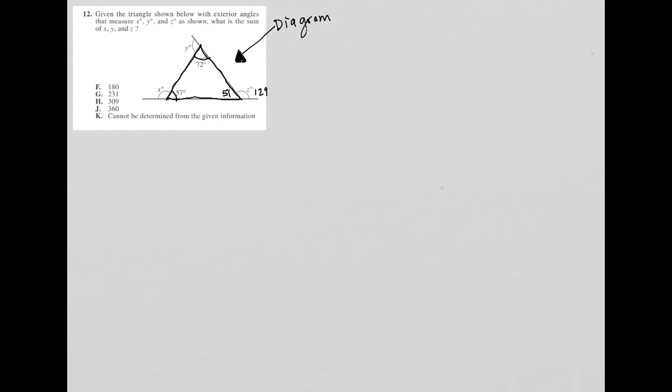And 180 minus 72 is what angle Y must be. So 108. And 180 minus 57 is what X must be, which is 123. Right? So I've essentially now filled out this entire diagram.